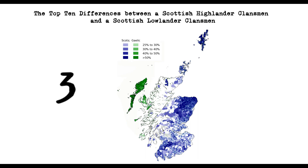3. Language. Highlanders spoke Gaelic, a Celtic language, while Lowlanders spoke Scots, a form of English influenced by Germanic and Scandinavian languages.